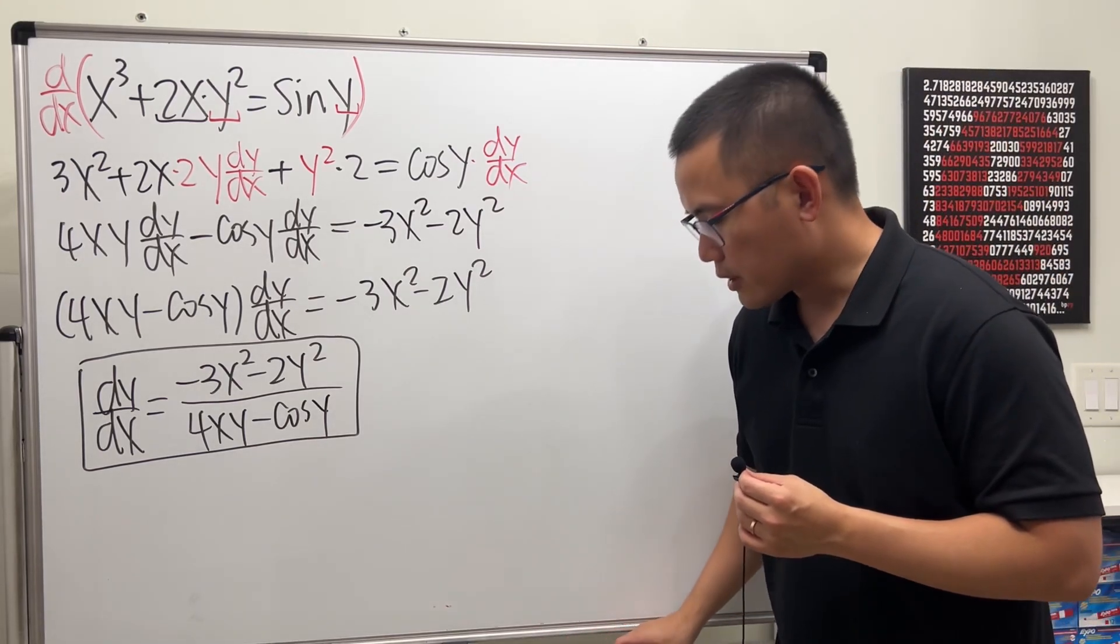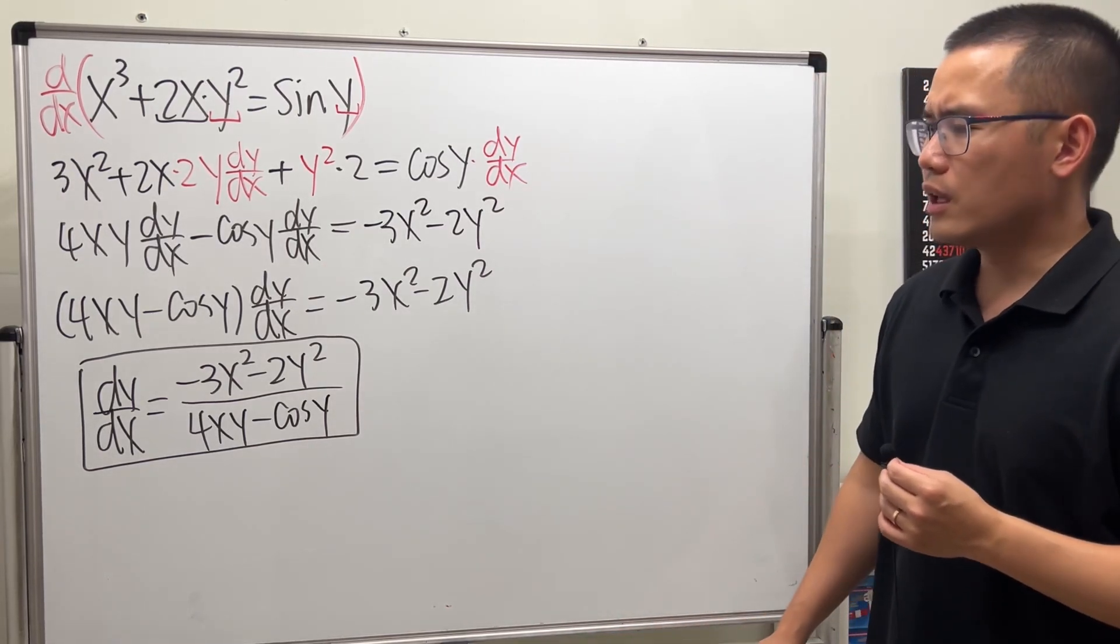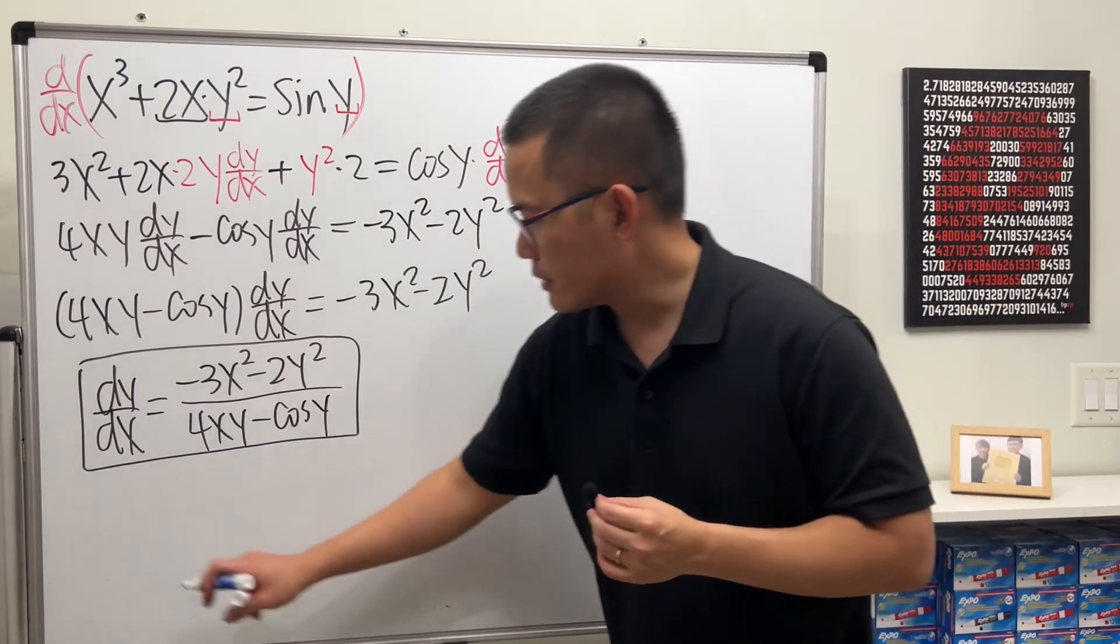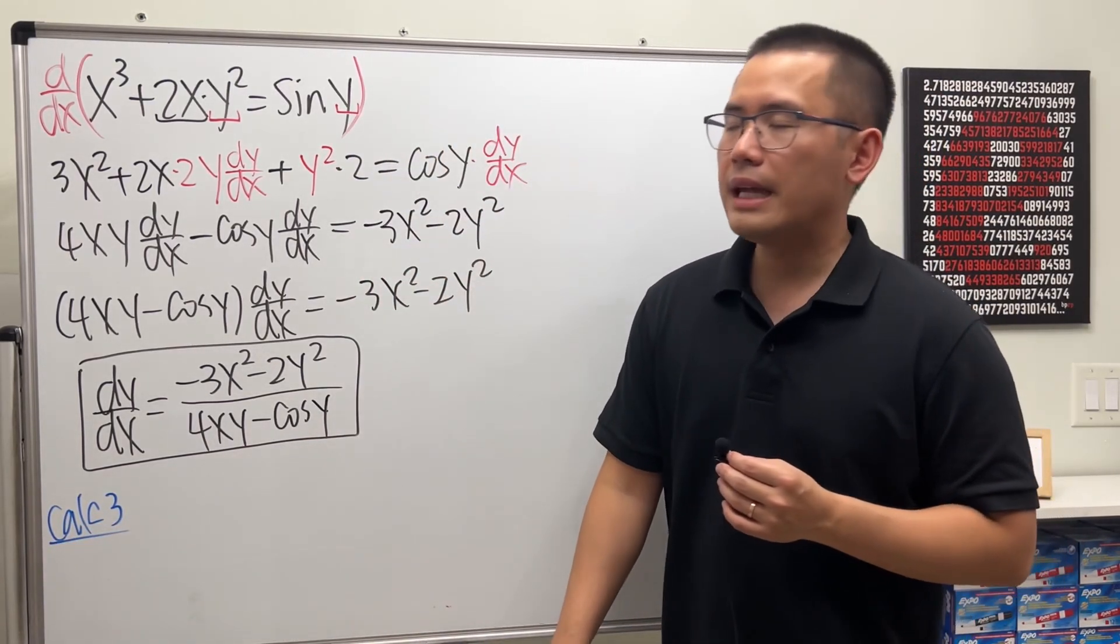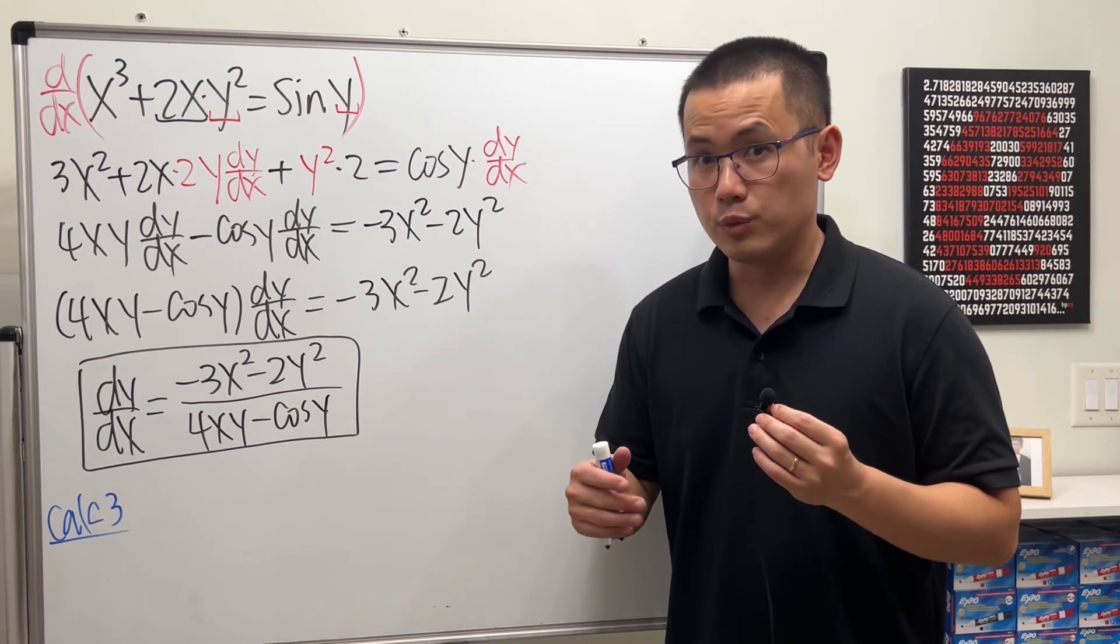Now, let's talk about the Calc 3 way. The Calc 3 way is the following. This right here is the Calc 3 way. Multi-variable, meaning that we will be talking about functions with more than one variable.